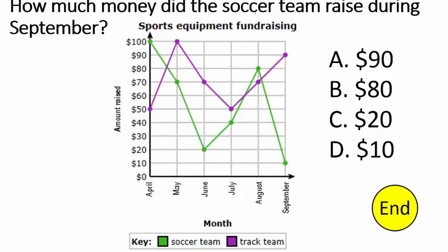How much money did the soccer team raise during September? To read a line plot, first we look here — soccer team is green. We follow the green line: in April they made $100, May $70, June $20, July $40, August $80, September $10. Choice D. It looks like the soccer team needs to get out and knock on some doors because they didn't make very much money in September.